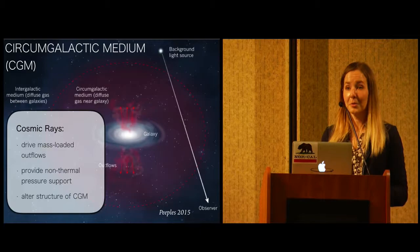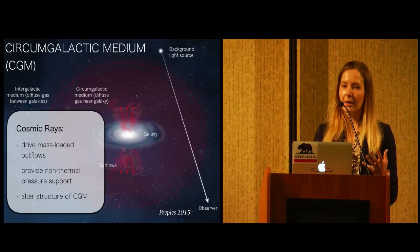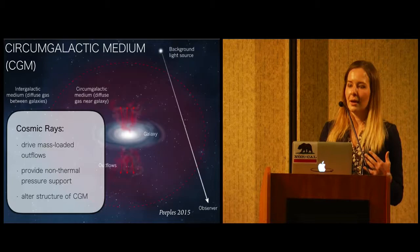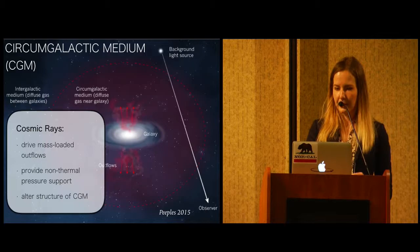And so where cosmic rays come into all this is that they drive mass-loaded outflows from the galaxy, and they provide a non-thermal pressure support that might explain the presence of a warm, neutral gas in the CGM that's not in thermal equilibrium with the halo temperature. And so inherently using cosmic rays in simulations predicts a CGM with a different structure and composition than simulations with just thermal feedback.